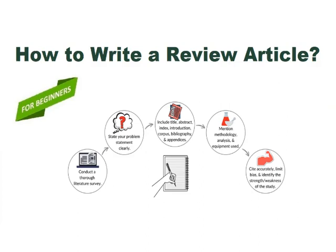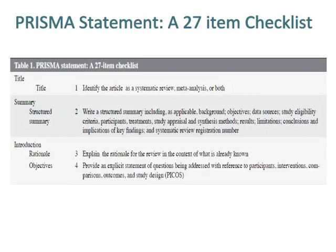How to Write a Review Article: Step-by-Step Guide based on the PRISMA Statement 27-item checklist for writing a well-designed review article. Item 1 is the title: identify the article as a systematic review, meta-analysis, or both.